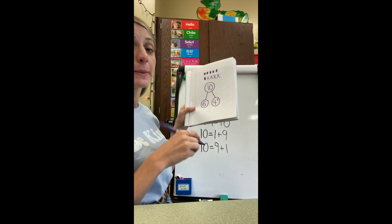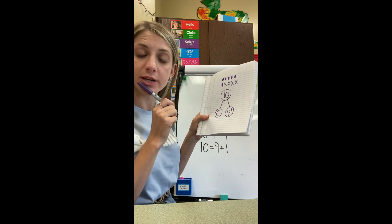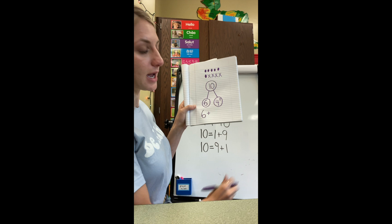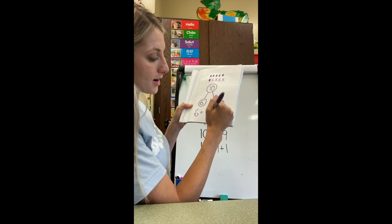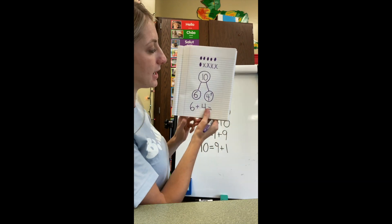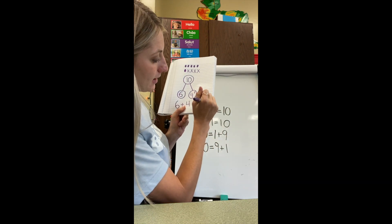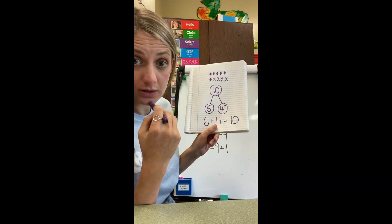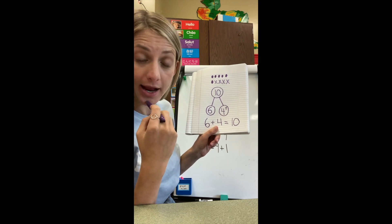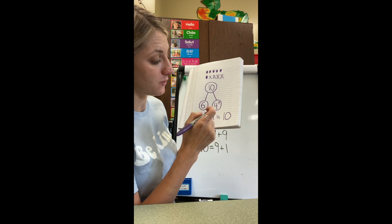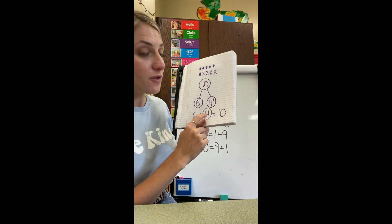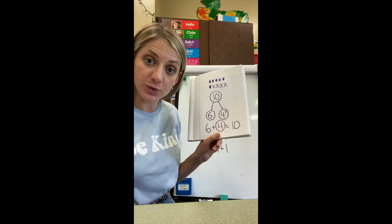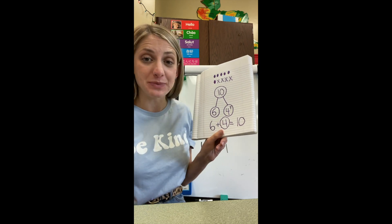Now we have to write our number sentence. And remember, our number sentence goes right along with the story. How many bunnies did they start with? Six bunnies. Plus, how many babies were born? Four. Equals a total of — how many did they have in all? Ten. Good. Remember, we have to circle the number that we found. Which number did we find? We found the four. So I'm going to go ahead and put a circle around that. We circle the four because it's the number that we found — that is our answer to our question. So how many babies were born? Four babies were born.